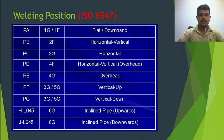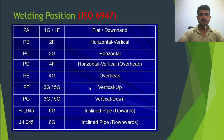In the next slide, PA means 1G or 1F — flat, downhand. PB is 2F — horizontal vertical. PC is 2G — horizontal. PD is 4F — horizontal vertical overhead. PE is 4G — overhead. PF is 3G or 5G — vertical up, depending on whether the pipe is rotated or fixed. PG is 3G or 5G — vertical down. Then HL045 is a 45 degree inclined position. 6G is inclined pipe upward or downward.